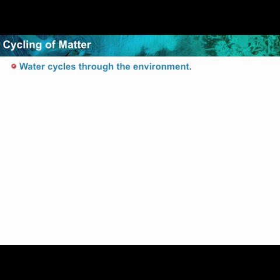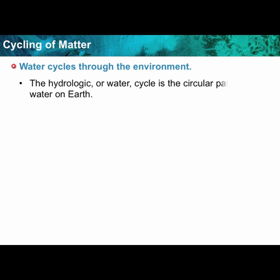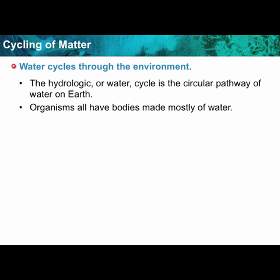Water cycles through the environment in what's called the hydro cycle. The hydro cycle, or water cycle, is a circular path of water on the earth. All organisms have bodies made mostly of water, so this is a pretty important cycle.